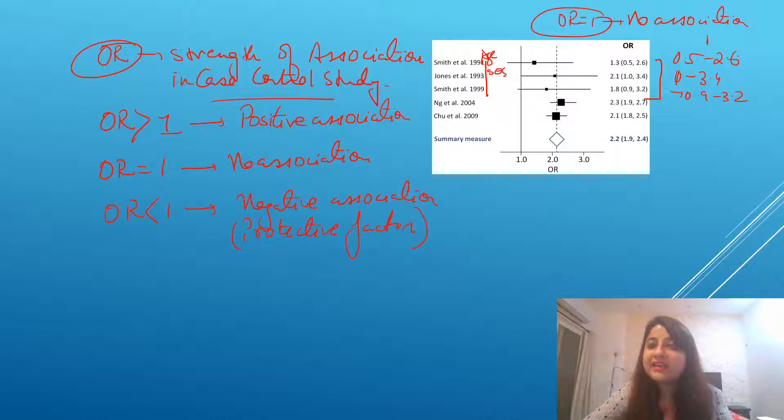So age, socioeconomic status, and nutrition, they do not show any significant association with breast cancer. Therefore, look how they are represented.